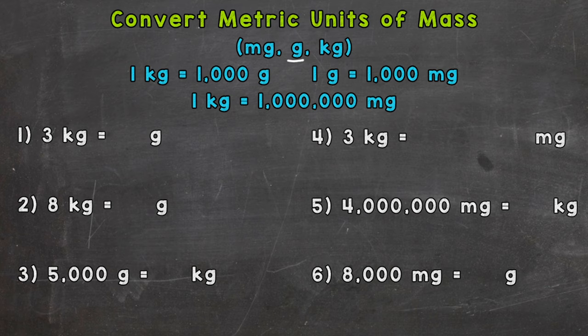So for example, milligram — the prefix milli means one one-thousandth. So a milligram is one one-thousandth of a gram. Therefore, a thousand milligrams equals one gram. And for a point of reference, a milligram is a unit of mass that is about a grain of salt or sand.